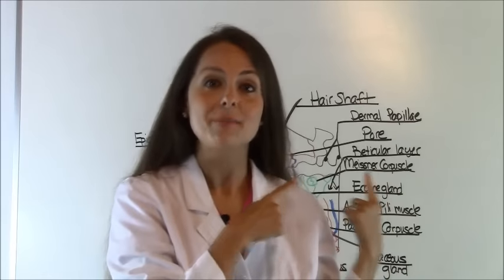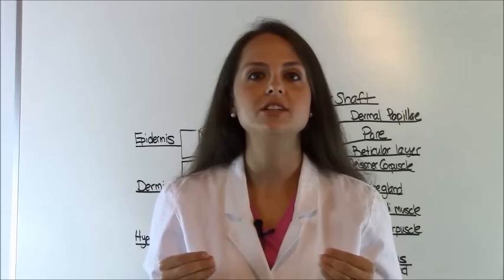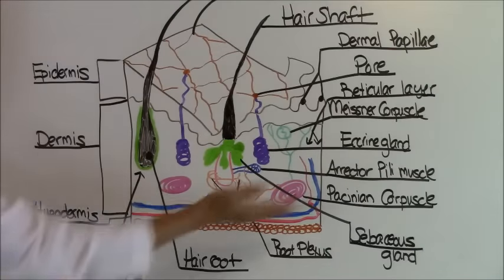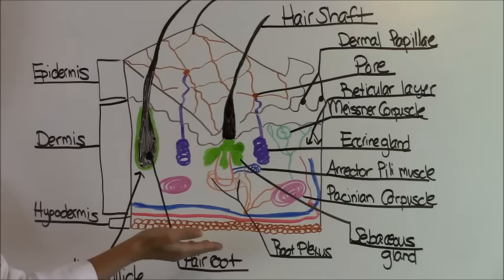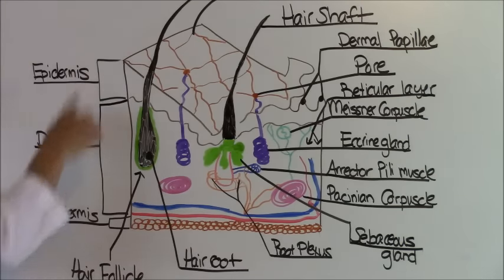Now let's go over this diagram behind me of all the appendages and sensory organs, and I'm going to go over the function of each. So if you want, take some notes. Here is a basic drawing of a skin layer, and we're going to go over these each individually. First, let's go over the layers of the skin.